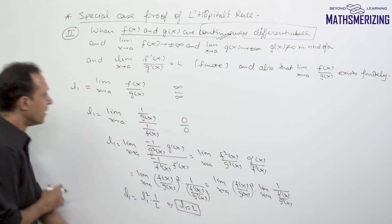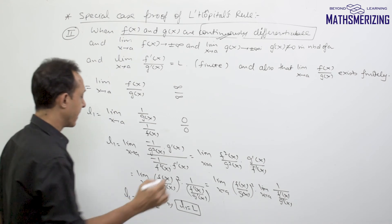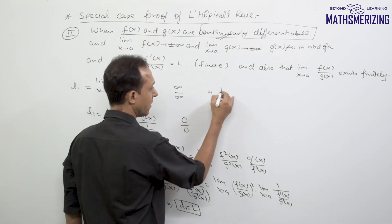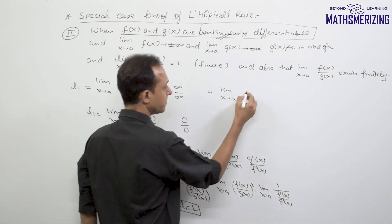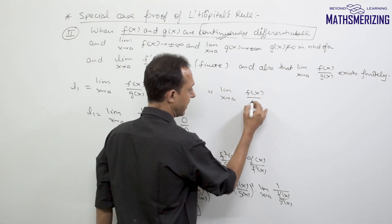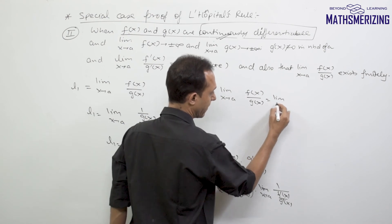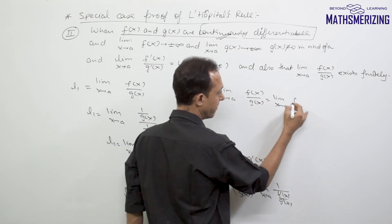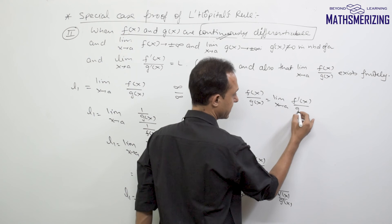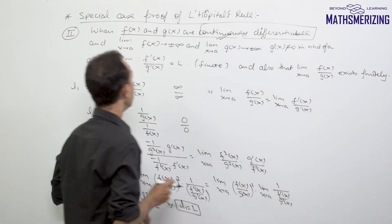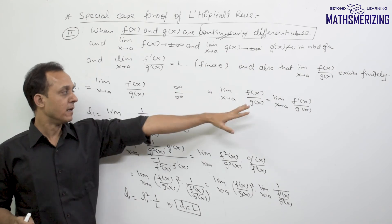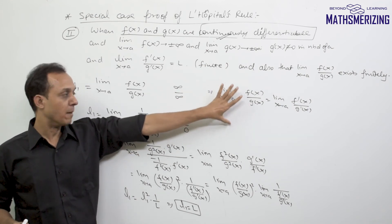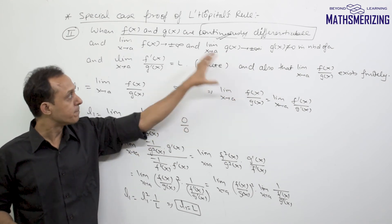So by comparing these two values, I can say that limit x tends to a of f(x) upon g(x) is equal to limit x tends to a of f'(x) upon g'(x) when f tends to infinite and g tends to infinite. And in no way this proof is complete because we have taken a very special case.